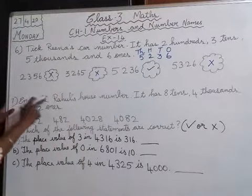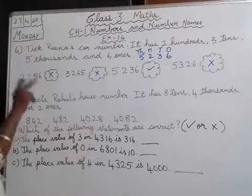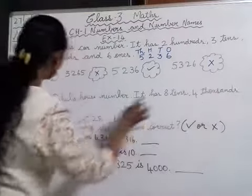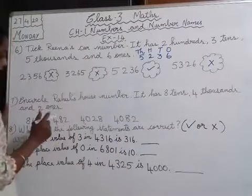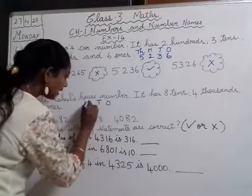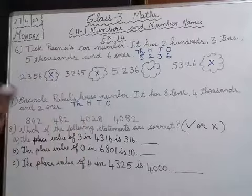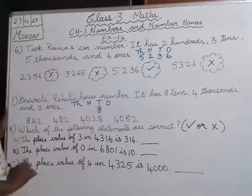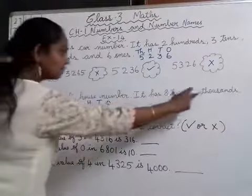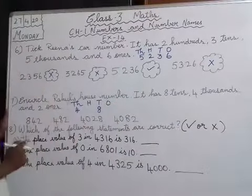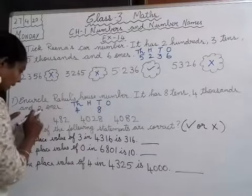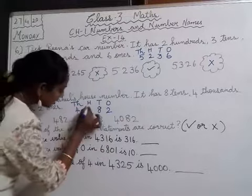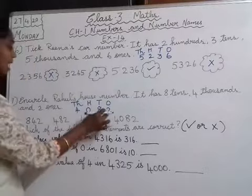Question number 7 — encircle Rahul's house number from the given options. It has 8 tens, 4 thousands, and 2 ones. Writing ones, tens, hundreds, thousands: 8 in tens place, 4 in thousands place, 2 in ones place. No number is given in hundreds place, so it is 0. Rahul's house number is 4082.